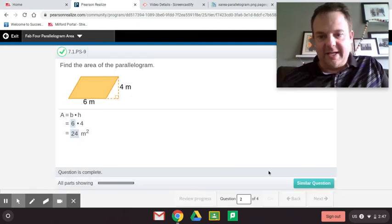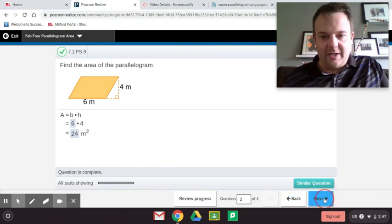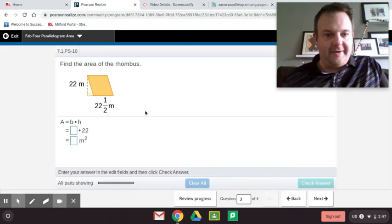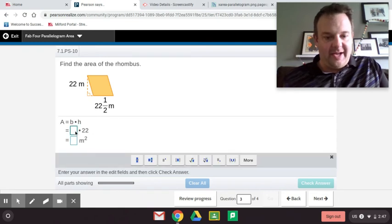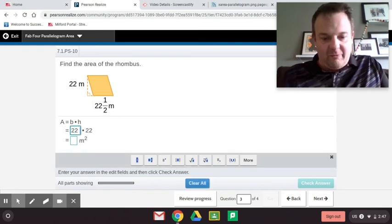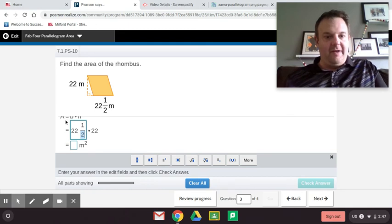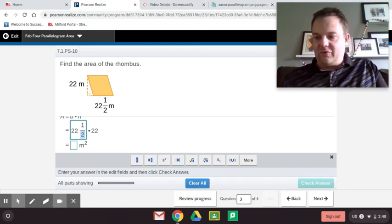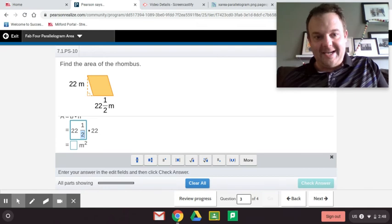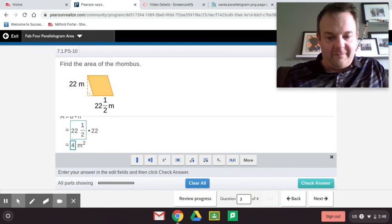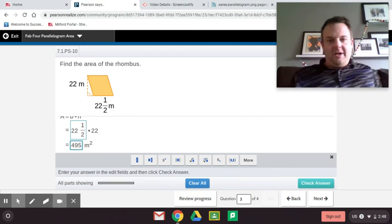And next we have, oh, so now we have a fraction, a mixed number of sorts. The hack I wanted to share with you here, the base is 22 and a half. So we do 22 and a half times 22. Now, 22 and a half equals 22.5, so I'm going to write that 22.5 times 22, and that equals 495. You're allowed to use a calculator on these.